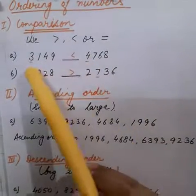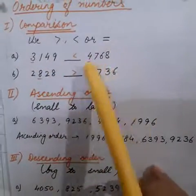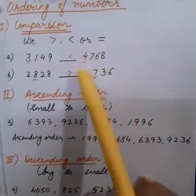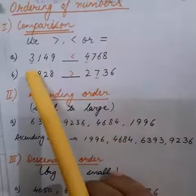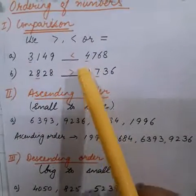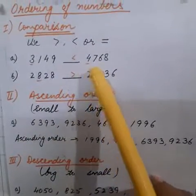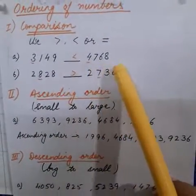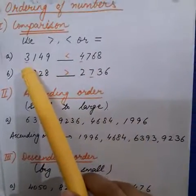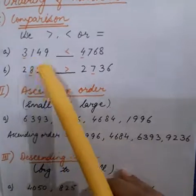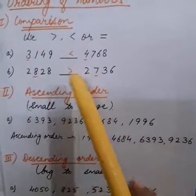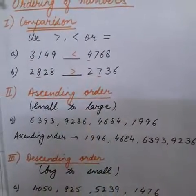4 is greater than 3. So this whole number will be greater than this number. So, 4768 will be greater than 3149.